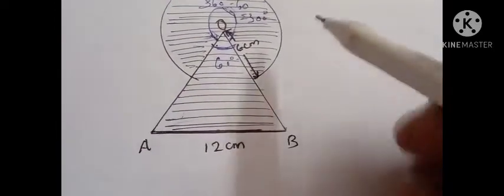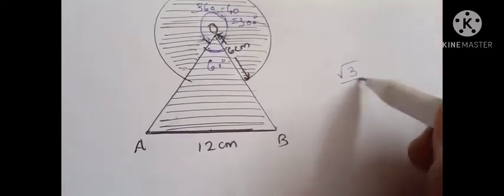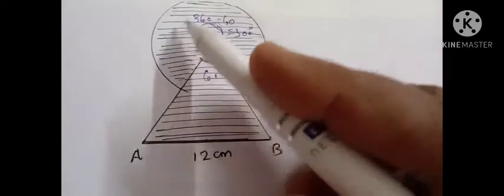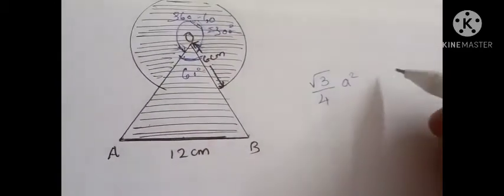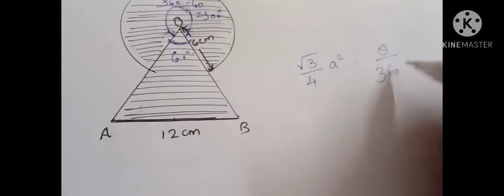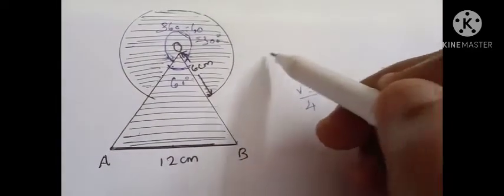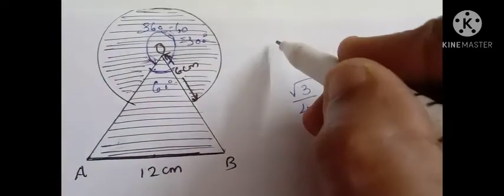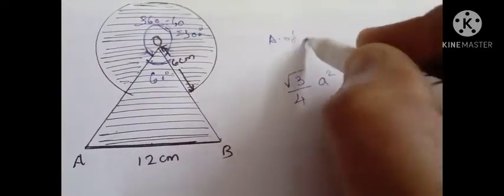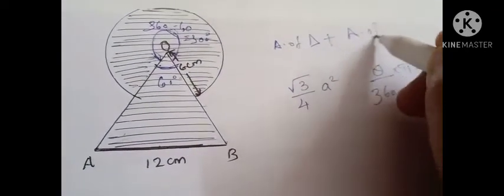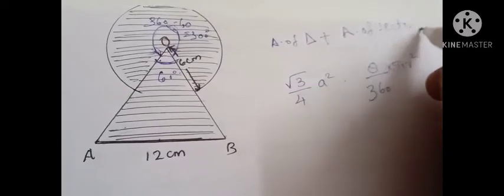Area of the shaded portion equals area of the equilateral triangle plus area of the major sector. The area of the equilateral triangle can be found using the formula (√3/4)a². The area of the major sector can be found using the formula (θ/360) × πr².